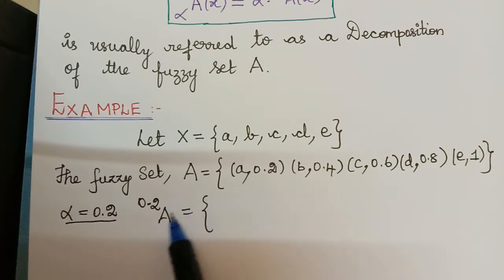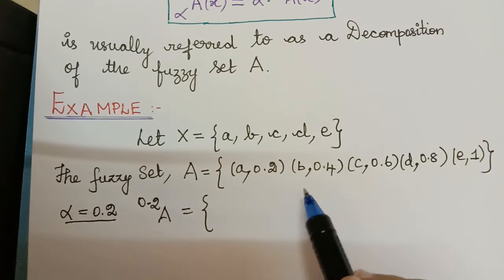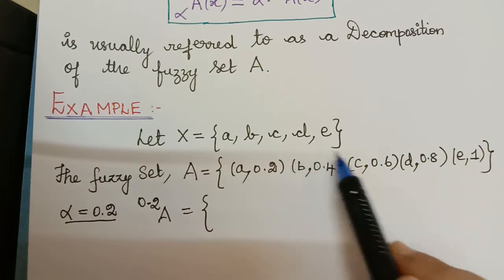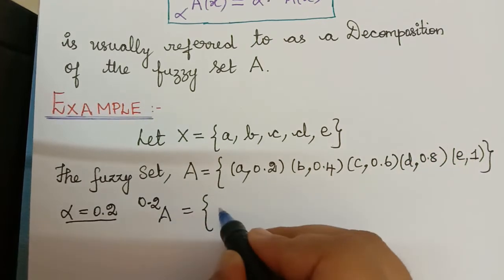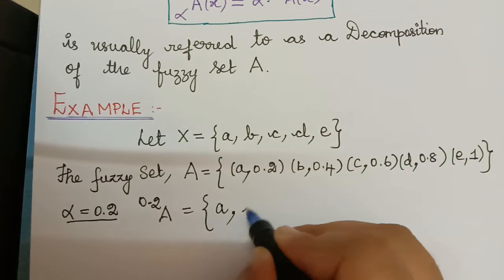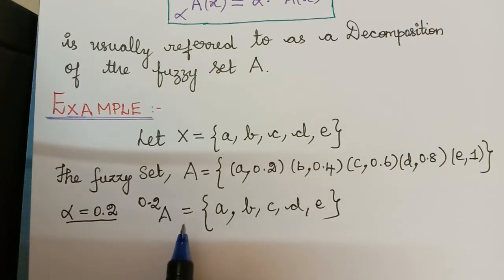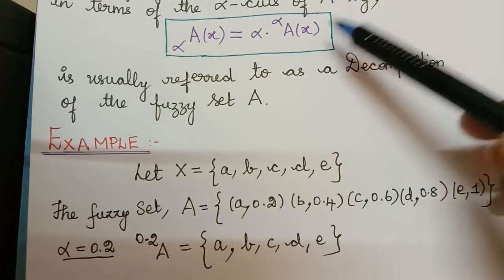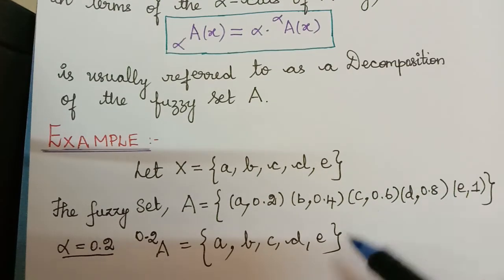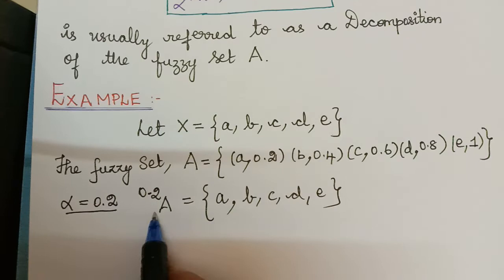Observing the fuzzy set, the element with membership grade equal to 0.2 is A, and the elements with membership grades greater than 0.2 are B, C, D, and E. So all elements fall under this set. Therefore the 0.2-cut of A = {A, B, C, D, E}. Now we need to find the special membership function for this alpha cut set.